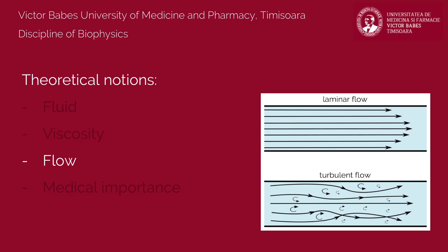The transition between the two flow regimes is related to a parameter specific to each real fluid, called the coefficient of absolute viscosity. Usually, this coefficient is marked using the Greek letter eta.